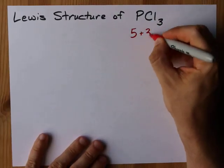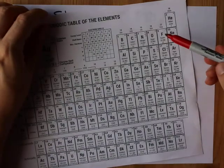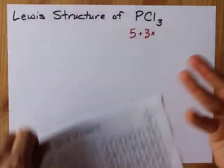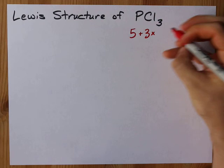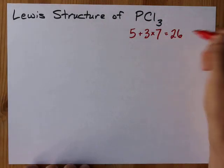Each of the chlorines, and there are 3 of them, brings 7 valence electrons. It's in group 17, and it's worth your while to just memorize that all the halogens bring 7 each. When I add all these together, I get 26 electrons.